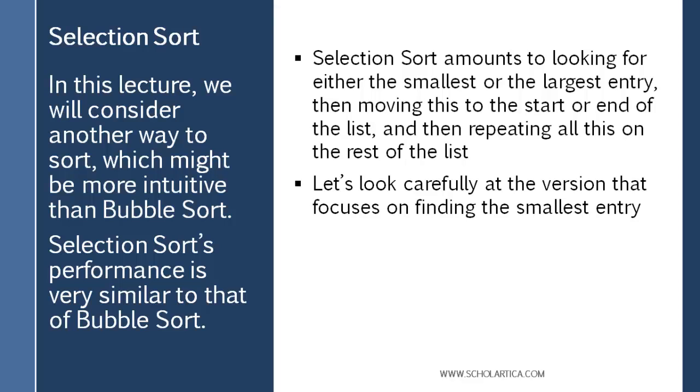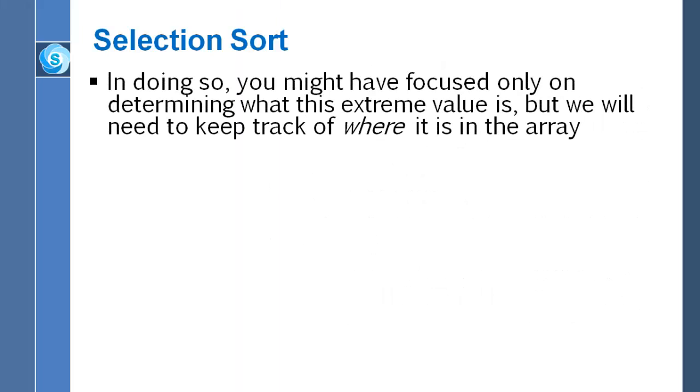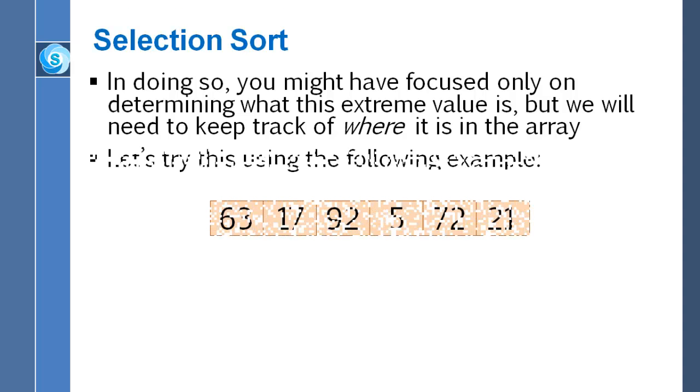Let's focus on the version of selection sort that searches for the smallest entry. You probably have experience going through an array looking for the largest or smallest entry. But in doing so, you might have focused only on determining what that extreme value was. Whereas for our purposes, we need to remember where that value is in the array. As we're searching through the array, we need to keep track of where the smallest entry is. Every time we find a new entry that's smaller than anything we've seen so far, we have to remember where that new entry is.